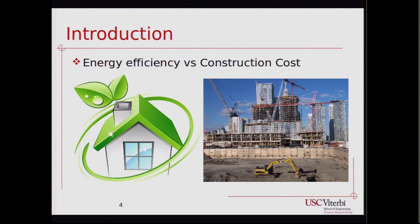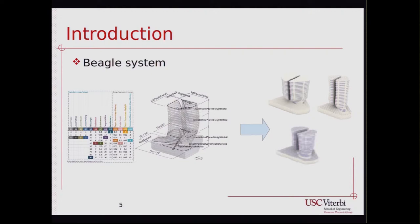In the computational design literature, the current solution is to use genetic algorithms. For example, the Beagle system receives as input an initial design made by a human. That initial design has some free parameters, and then the system optimizes these parameters and outputs a series of design solutions.